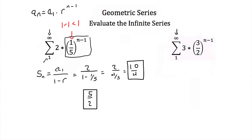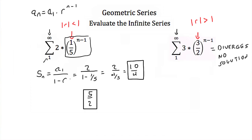In our next example we have 3 times (three-halves) to the (n minus 1), so our r value is three-halves. The absolute value of three-halves is greater than 1, so this infinite series does not converge — it is divergent, meaning it has no solution. Now that we've covered convergence and divergence, that completes the tutorial on geometric series.